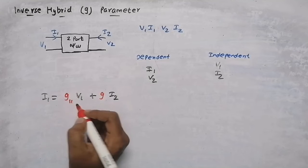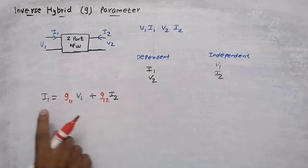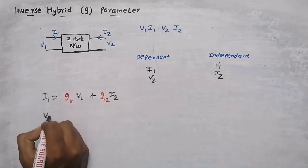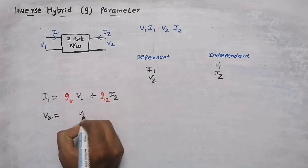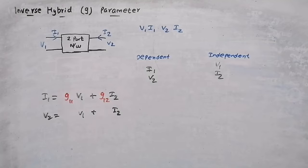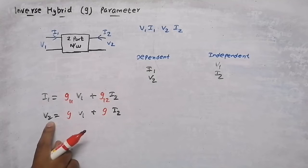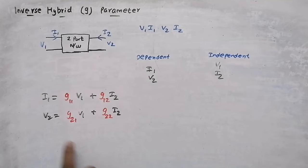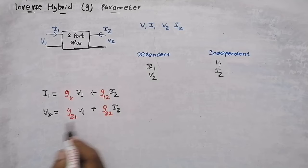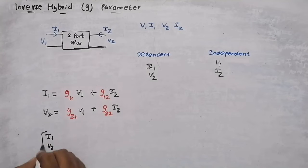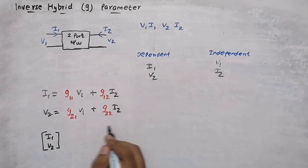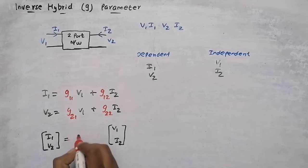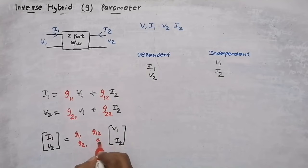The constants are g11, g12, g21, and g22. The equation for finding i1 uses v1 and i2 with constants g11 and g12. The equation for finding v2 uses v1 and i2 with constants g21 and g22. In matrix form, i1 and v2 form the dependent column matrix, and v1 and i2 are the independent variables.